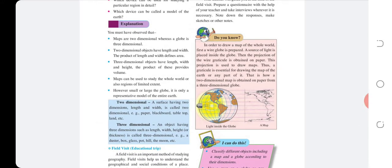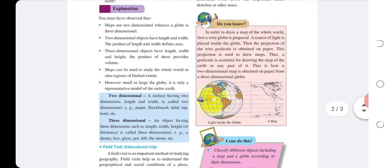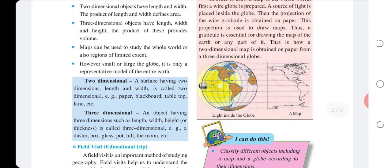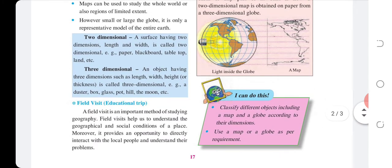Two-dimensional: A surface having two dimensions, length and width, is called two-dimensional. Examples include paper, blackboard, tabletop, and land. Three-dimensional: An object having three dimensions such as length, width, and height.